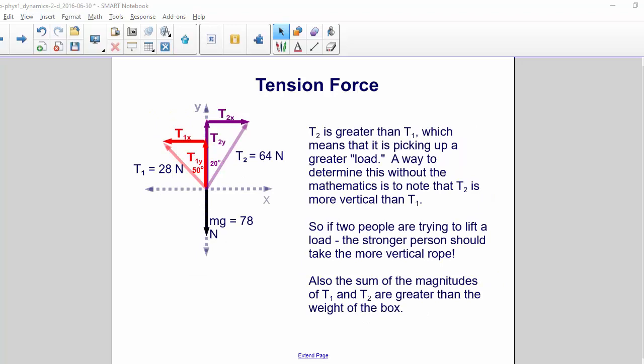T2 is greater than T1, which means that it's picking up a heavier load. A way to determine this without mathematics is to note that T2 is more vertical than T1. So if two people are trying to lift a load, the stronger person should take the more vertical rope.